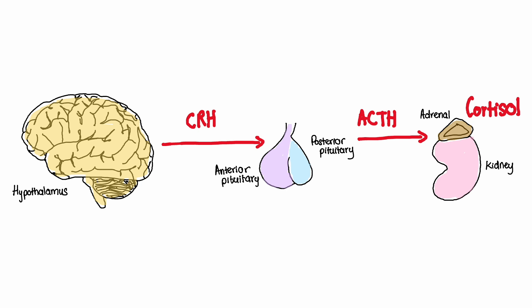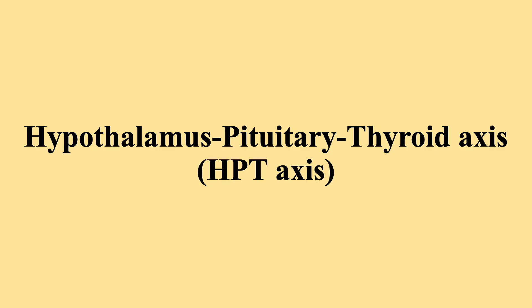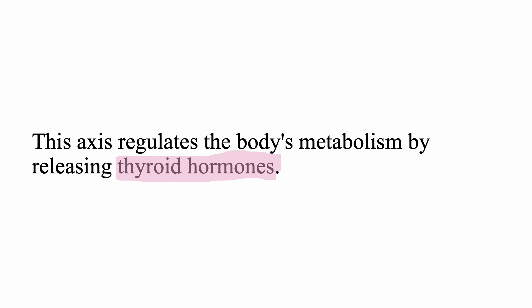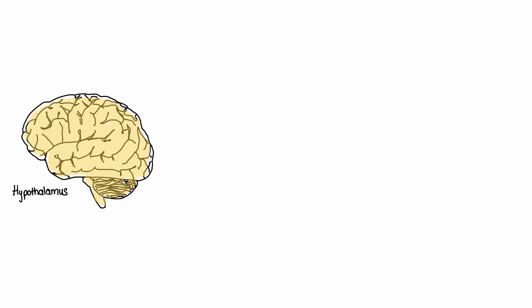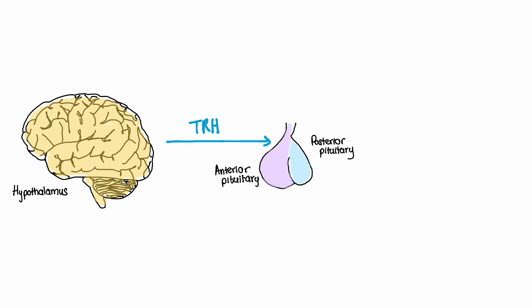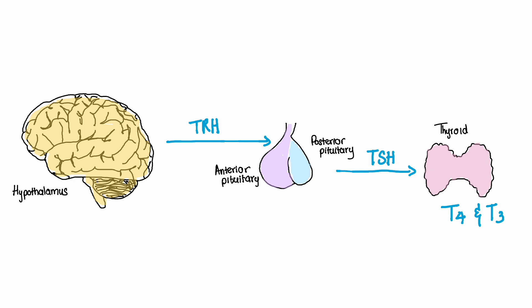Another important axis is the hypothalamus pituitary thyroid axis, also called the HPT axis. This axis regulates the body's metabolism by releasing thyroid hormones. The hypothalamus releases thyrotropin-releasing hormone, which signals the pituitary gland to release thyroid stimulating hormone. Thyroid stimulating hormone then stimulates the thyroid gland to release thyroid hormones, usually T4 and T3, which regulate metabolism and energy levels in the body.